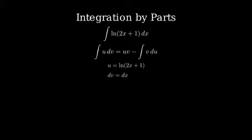Now we need to find du and v. To find du, we differentiate u with respect to x. Using the chain rule, du equals 2 over 2x plus 1 dx. And v is simply the integral of dv, which is x.